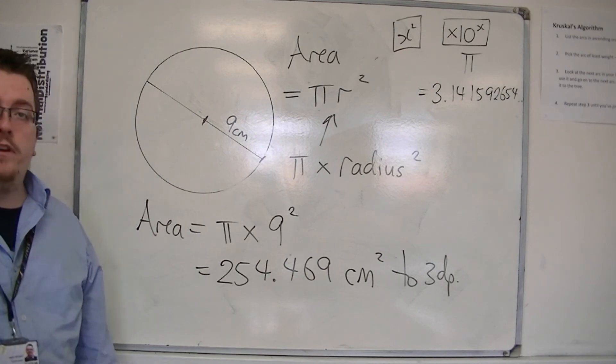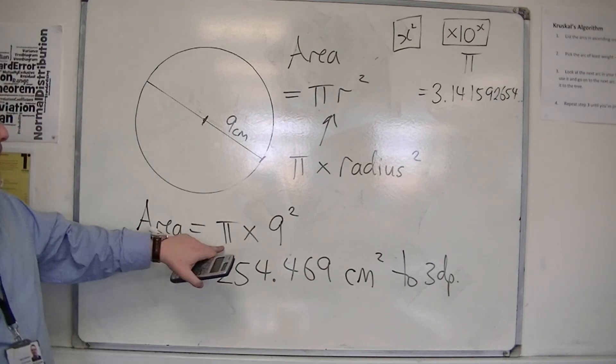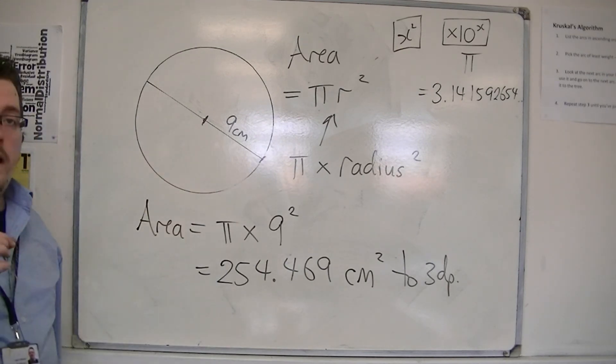And that's how you can find the area of a circle. You just need pi and the radius, and you'll be there.